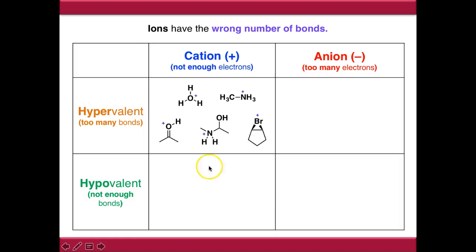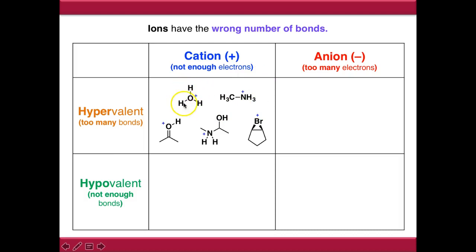Here are some examples of hypervalent cations. These are all species where the atom in question is making too many bonds, and as a result has developed a positive charge - it has lost electrons. So we have many examples of oxygen making three bonds, examples of nitrogen making four bonds, and a slightly more unusual example of bromine making two.